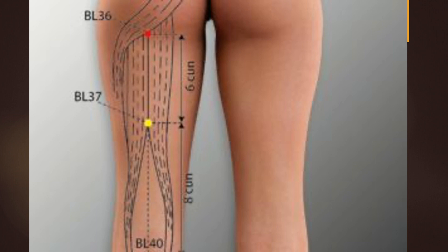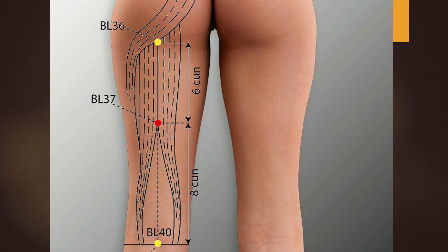Bladder 36 is used if the pain radiates down the back of the thigh. Location: on the posterior aspect of the thigh, in the middle of the transverse gluteal fold. Functions: activates the meridian, relieves pain, treats hemorrhoids. Needling: perpendicular insertion 1 to 2 cun. Bladder 37 is also used if the pain radiates down the back of the thigh. Location: on the posterior aspect of the thigh, 6 cun below Bladder 36, on the line connecting Bladder 36 and Bladder 40. Functions: activates the meridian, benefits the lumbar area, relieves pain. Needling: perpendicular insertion 1 to 2 cun.